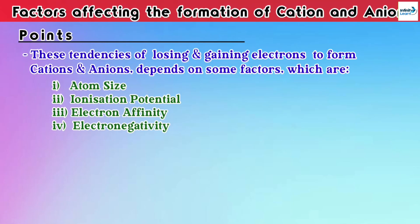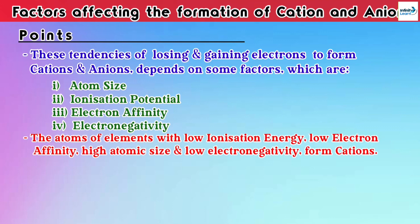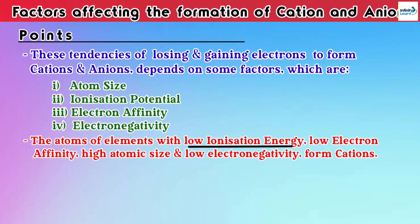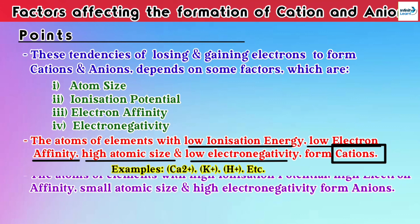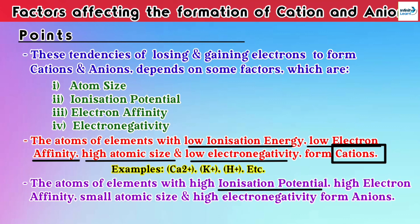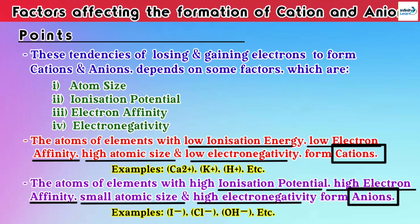Lastly, some important things to remember: atoms of elements with low ionization energy, low electron affinity, high atomic size, and low electronegativity form cations. And atoms of elements with high ionization potential, high electron affinity, small atomic size, and high electronegativity form anions.